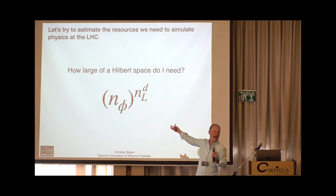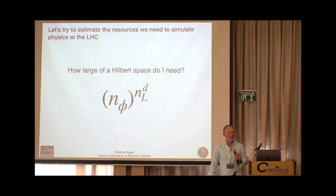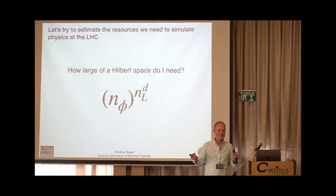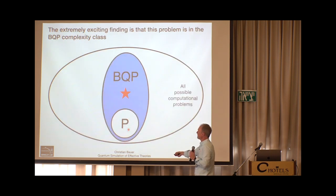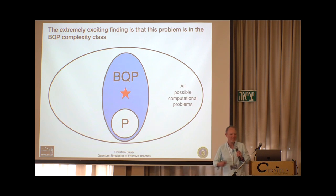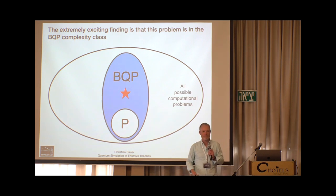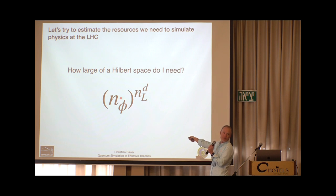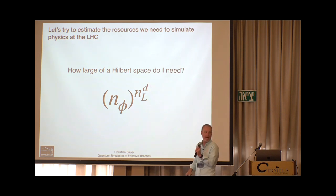So now here's the elephant in the room: how many lattice sites do I need? The number of dimensions is fixed at three. What I can play with is how many field values I need at each lattice site and how many lattice sites I need. The key insight is that the shortest wavelength you can describe with lattice spacing l corresponds to an energy cutoff of 1/l, and the longest wavelength corresponds to roughly the total lattice size.